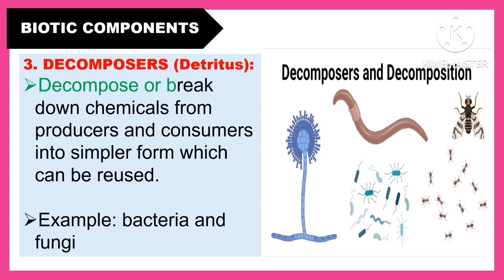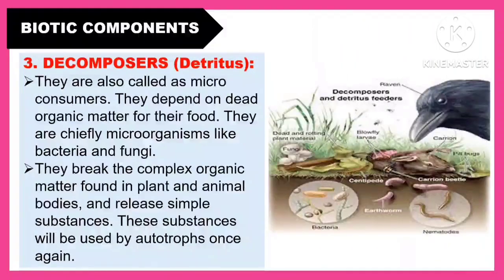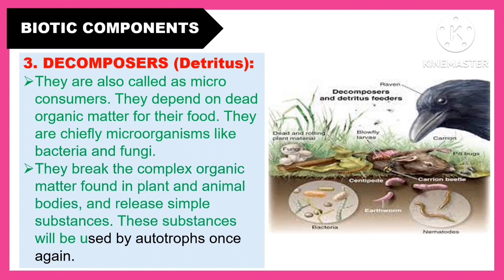Another biotic component is the decomposers. Decomposers break down chemicals from producers and consumers into simpler forms which can be reused. Examples are bacteria and fungi. Decomposers are also called micro-consumers. They depend on dead organic matter for their food. They are chiefly microorganisms like bacteria and fungi. They break the complex organic matter found in plant and animal bodies and release simple substances. These substances will be used by autotrophs once again.